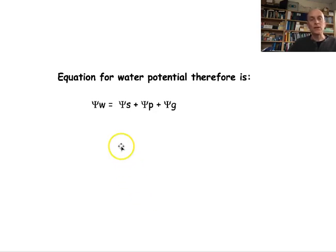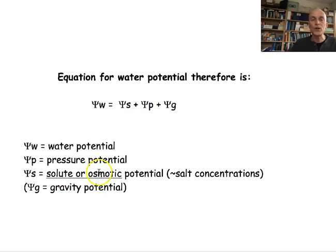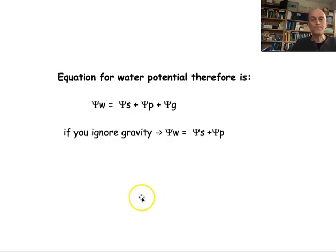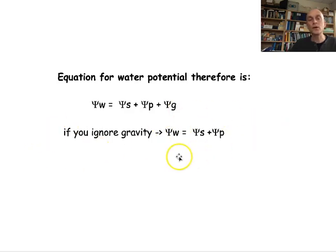The water potential equation is composed of sub-components: the water potential equals the solute potential plus the pressure potential plus the gravity potential. The solute potential is also called the osmotic potential — essentially the salt concentrations in the solvent. The matrix potential (psi m) is almost always ignored because it is very small relative to the other components. Gravity is also often ignored, especially for small plants as opposed to tall trees. Simplified, water potential equals solute potential plus pressure potential.